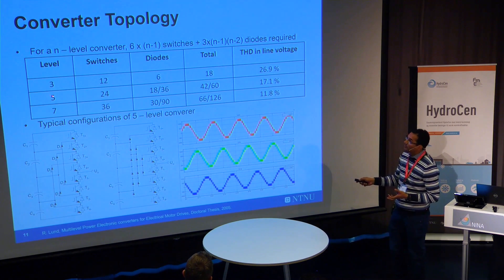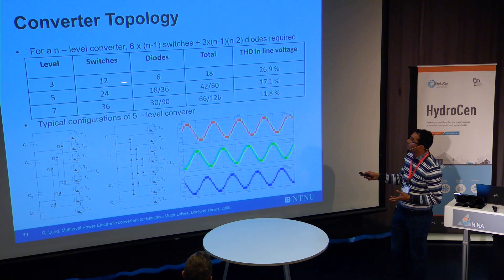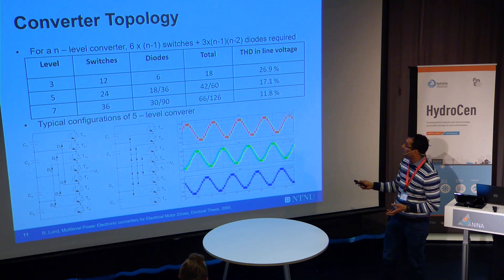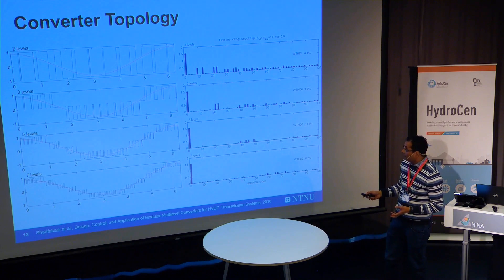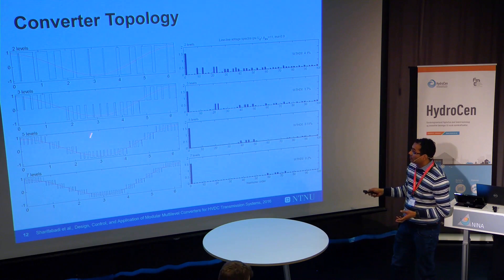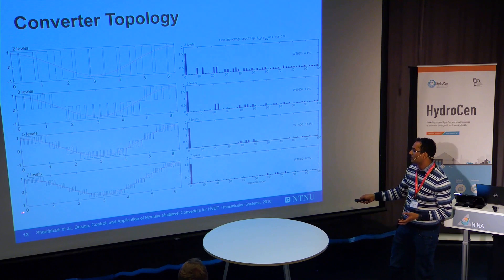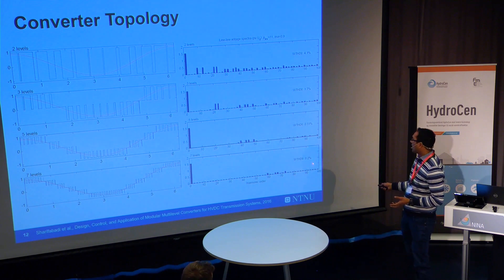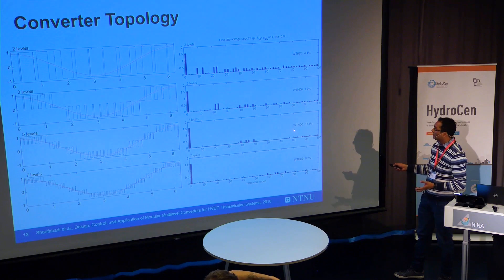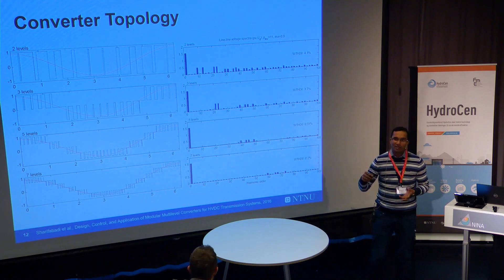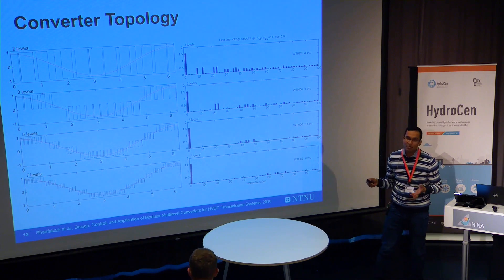As we go from three to five to seven levels, the harmonics decrease significantly. At seven levels the output is almost sinusoidal — about 0.2% current THD. At five levels we have 0.5% current THD. As we go higher in level, we have less damper-winding loss in the machine, but the system becomes more and more complex with more and more switches required.